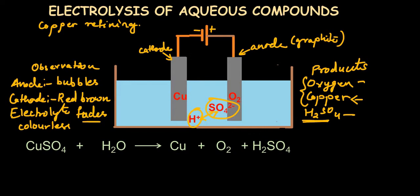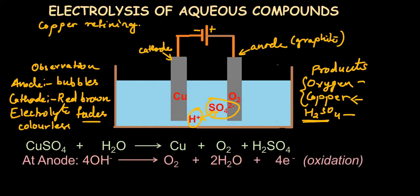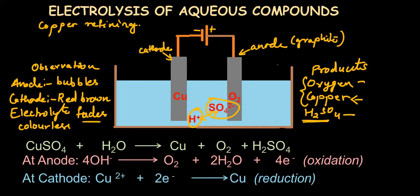Now let's look at the half equations. At the anode, the hydroxide ion forms oxygen, water, and releases four electrons — this is an oxidation process because electrons are lost. At the cathode, copper ions gain electrons to form copper metal — this is a reduction process.